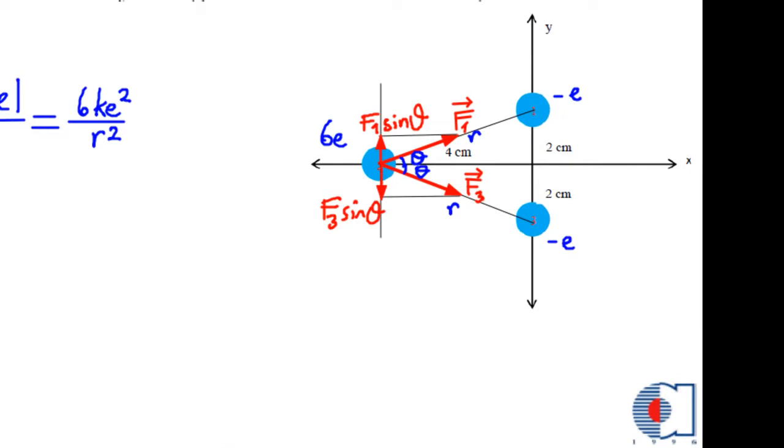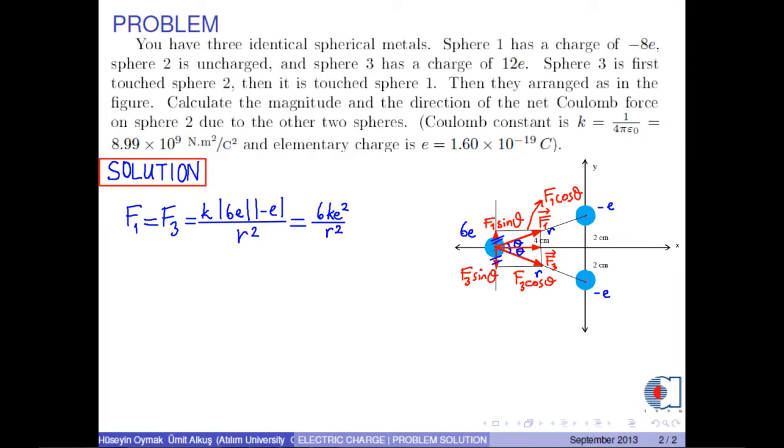According to the figure, it is easily seen that the y component of F1 and F3 are equal. So, they are gone. We are left with the x components of F1 and F3, which are F1 times cosine theta and F3 times cosine theta. So, the net force on Sphere 2, which is F1 plus F3, is calculated as 2 times F1 times cosine theta i hat. Because the net force is in the positive x direction.